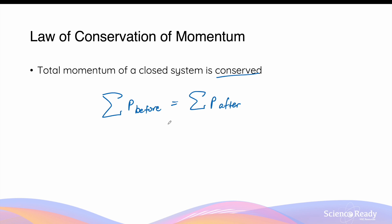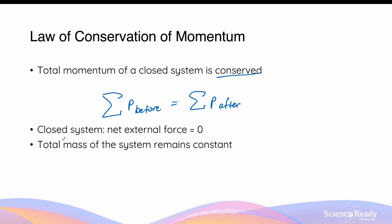However, before we do that, it is important to keep in mind when the total momentum of a system remains conserved. A closed system in physics describes a system in which the net external forces acting on the masses equal zero. External forces can include things like weight force, friction, or any sort of applied force that comes from objects or sources outside the system.